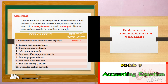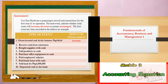Corona Hardware is preparing to record cash transactions for the first year of its operation. For each event, indicate whether total assets will increase, decrease, or remain unchanged. The first event has been recorded as an example: owner invested cash for his business, 200,000 pesos — the effect on total assets is increased, because adding cash to the business increases assets. You may pause this video while you are answering.